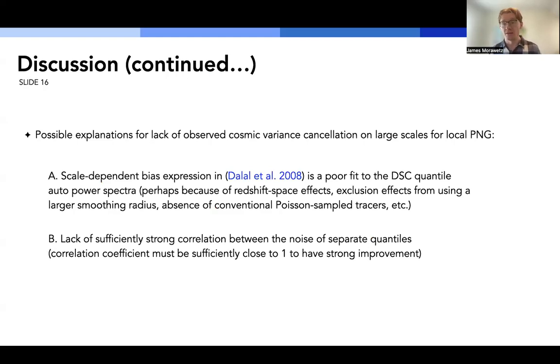So some of the possible explanations for this lack of cosmic variance cancellation can include, A, that the scale-dependent bias expression from the Dalal et al 2008 model isn't actually a good fit to our density split functions. And this could be for a variety of reasons. For example, redshift space effects, exclusion effects based on the fact that we're using a larger smoothing radius, the fact that these quantiles don't technically constitute conventional Poisson sample tracers. And B, also because these quantiles don't have as strong correlation in their noise as they would need to to observe significant improvement. In other words, we need the shot noise contribution to be negligible compared to cosmic variance. And this would mean having a correlation coefficient in the noise that's relatively close to 1. And we don't necessarily observe this.